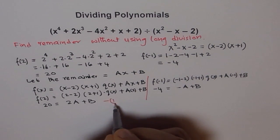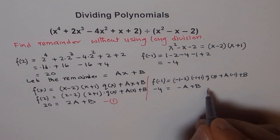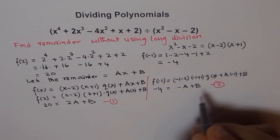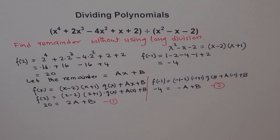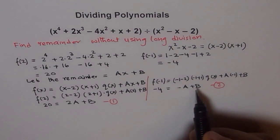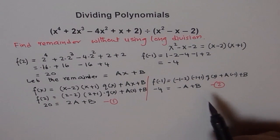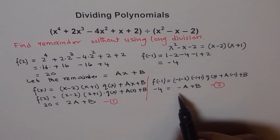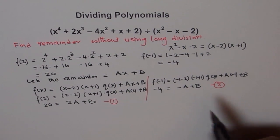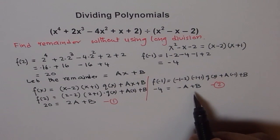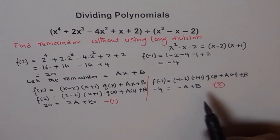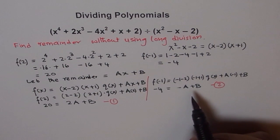So we basically get two equations from here. One is 20 equals to 2A + B and 2 is -4 equals to -A + B. Now, using these two equations we can surely find what A and B are. So, you can use substitution or elimination or whatever.